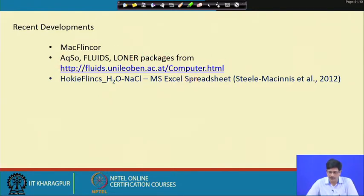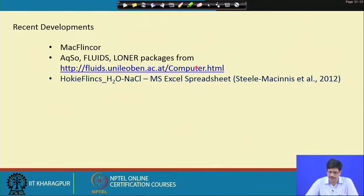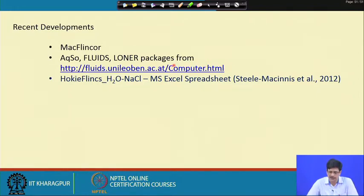Participants of this course can visit this website, look at the computer codes, run them, and get a feel for them. I am not demonstrating those particular packages here. The computer codes that Ronald J. Bakker has developed and is distributing very generously are compatible with presently available Windows environments and are available as executable codes. The source codes are not available, but the executable codes can be run on either a Macintosh or a Windows machine.